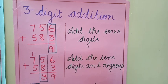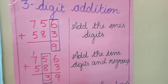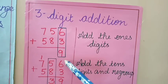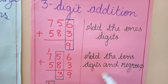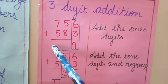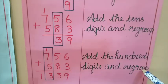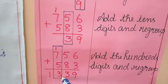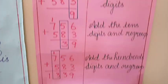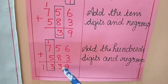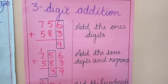Here we can see an example for 3-digit addition. First step, we add the numbers in the 1's place: 6 plus 3 is equal to 9. Then, moving on, add the 10's digits and regroup if necessary. We add 5 plus 8 and get 13. 3 is in the 10's place and 1 is taken over as the carryover to the 100's place. Next, add the 100's digits: 7 plus 5 is 12, and 12 plus 1 is 13. 3 is in the 100's place and 1 is taken over to the 1000's place. As a whole, 756 plus 583 gives you 1339, and these are the steps to be followed while doing 3-digit addition with regrouping.